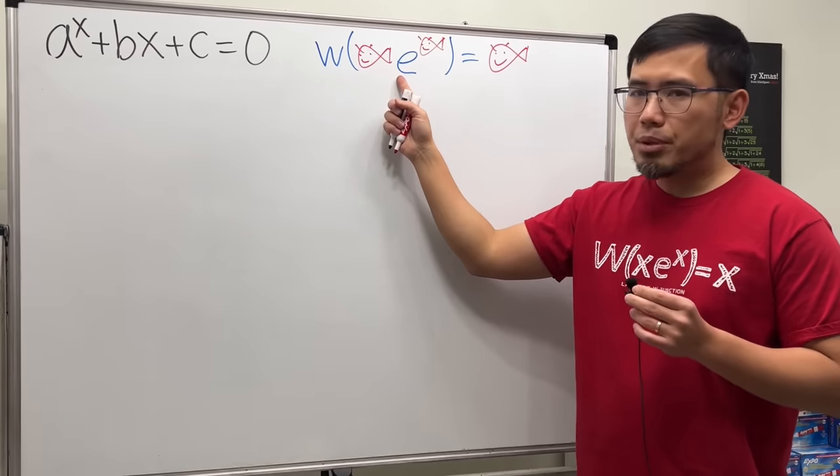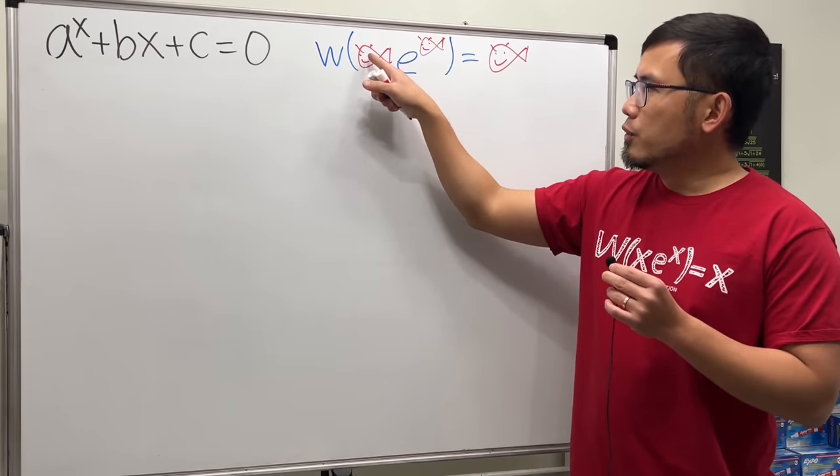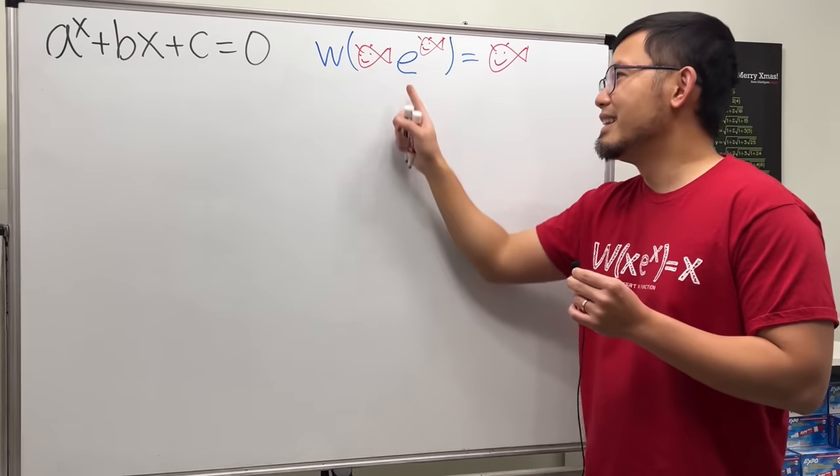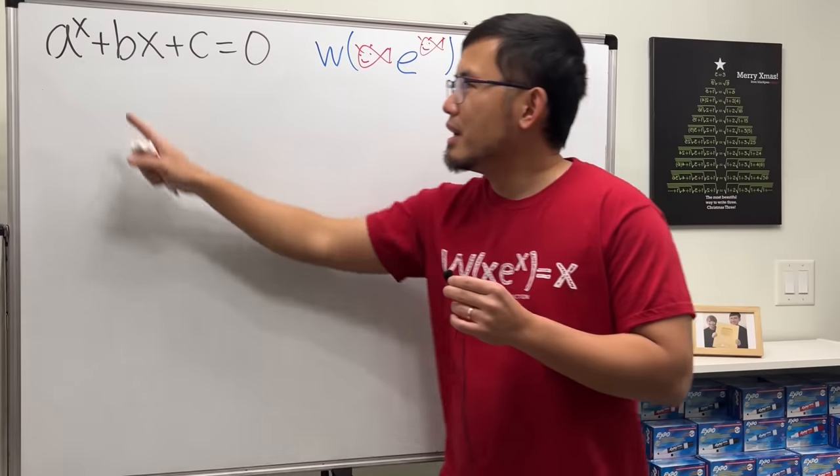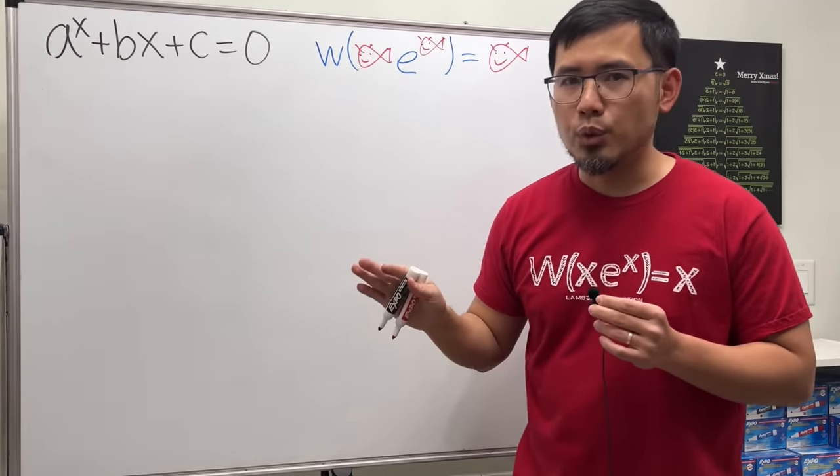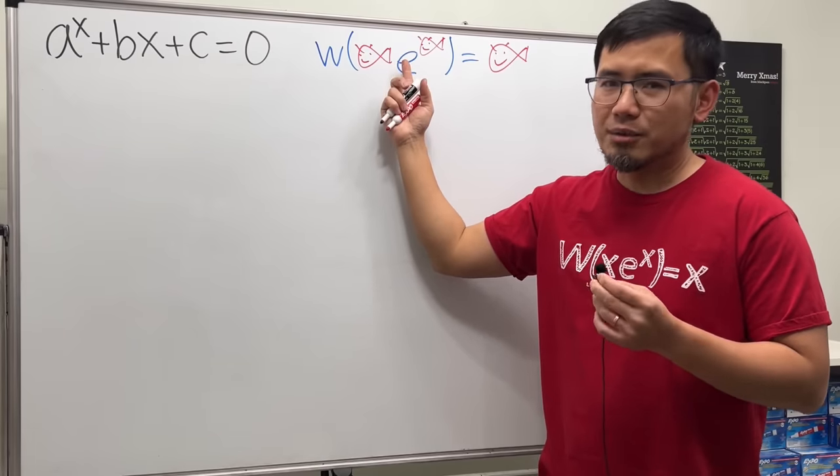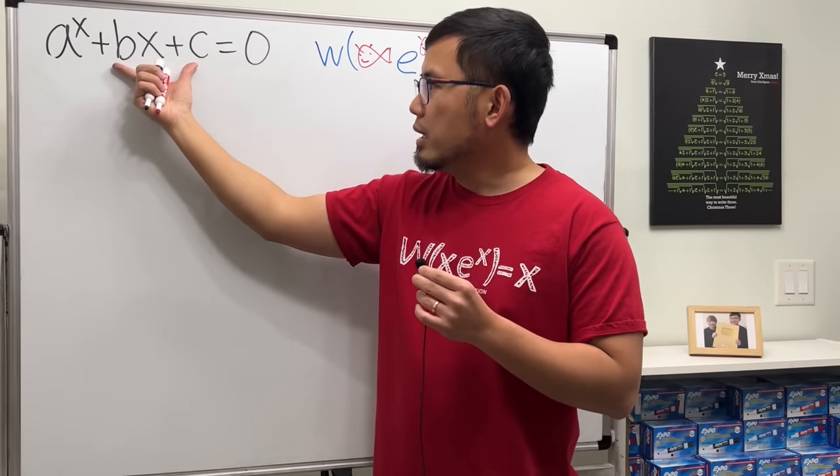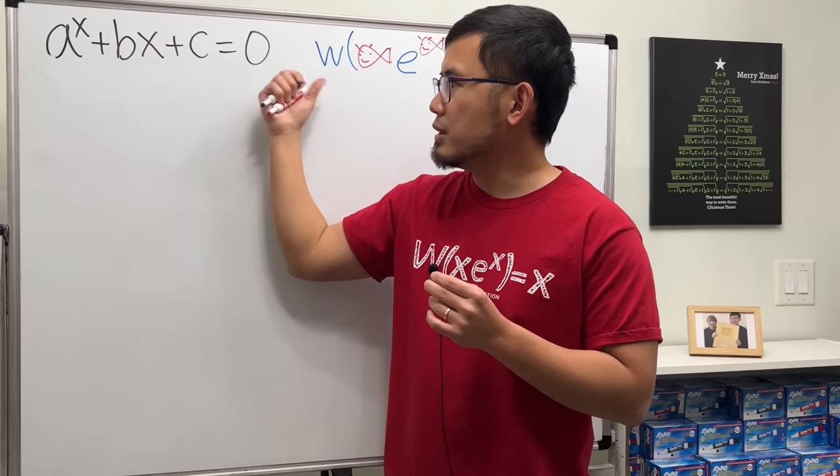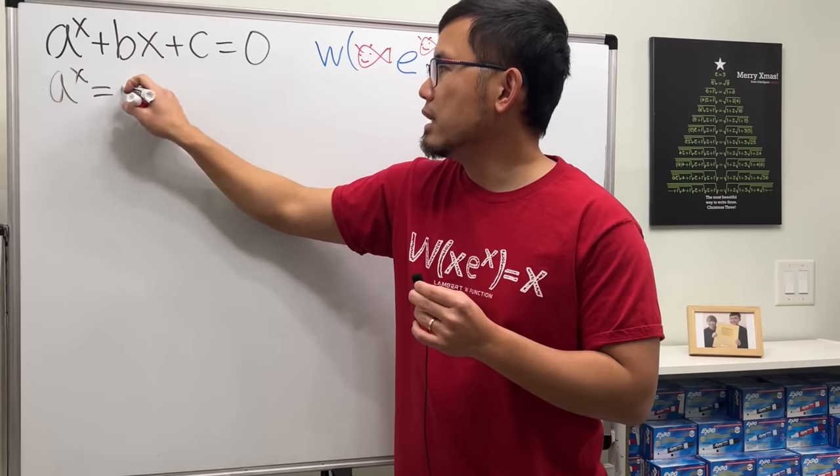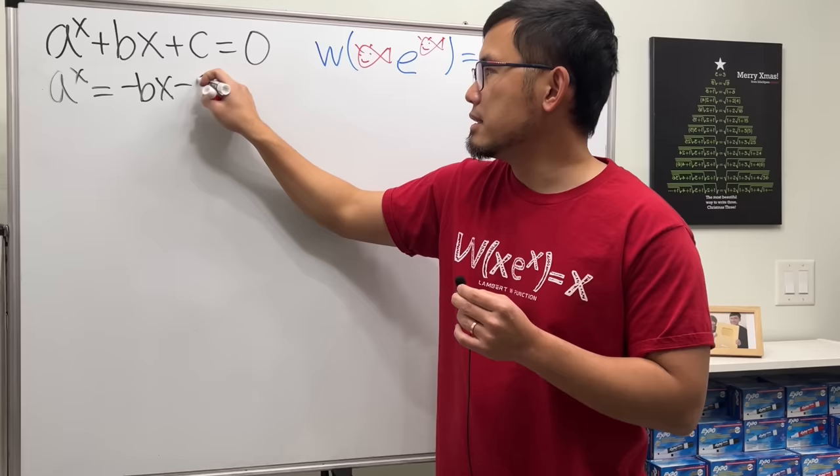Notice for the Lambert W function, fish, fish, right? They contain the x, and then it's a multiplication here. We have the x here and x here, but it's separated by addition. That's not what we want. We want to at least have a multiplication first. So let's make that happen first. We can do so by bringing these two terms to the other side. So we get a to the x power equals negative bx minus c.